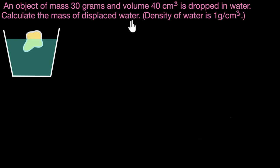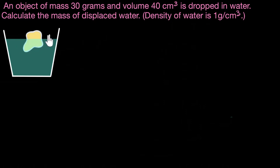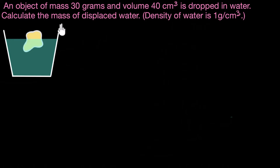What does that mean? Well, whenever you drop any object inside any liquid, or any gas for that matter, then as that object gets submerged, some of that liquid has to move away to make space for that object. That liquid that goes away is what we call the displaced water or the displaced liquid. It moves over and raises the level of water. That's why when you submerge something, the level of water rises. We need to calculate the mass of that displaced water.